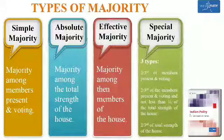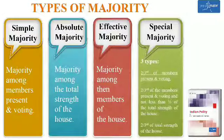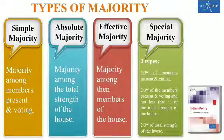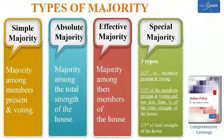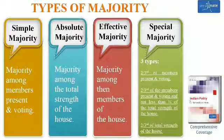First type: two-third of the members present and voting. Second type: two-third of the members present and voting and not less than half of the total strength of the house. Third type: two-third of the total strength of the house.